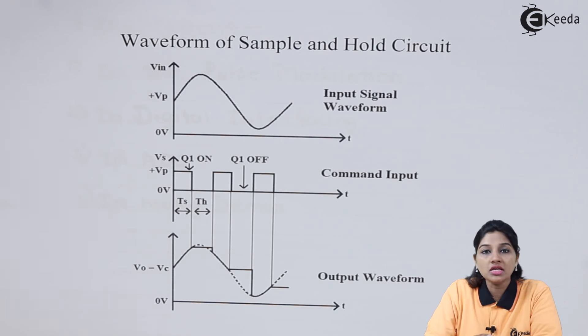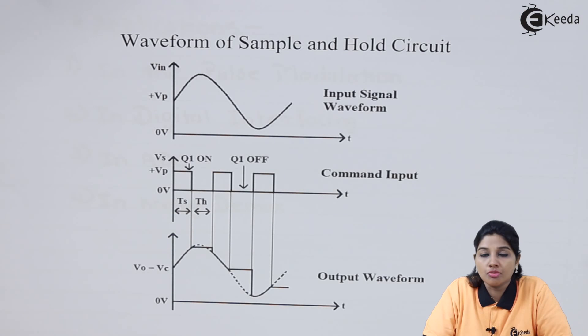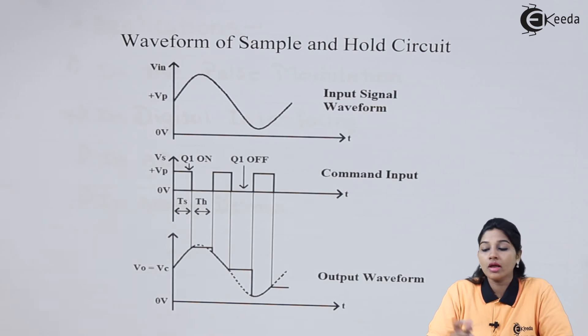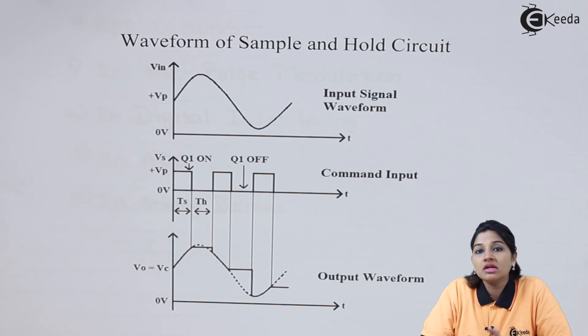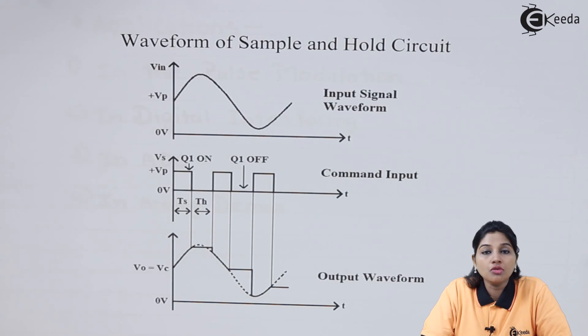Ts is defined as the time interval during which the capacitor charges to the instantaneous value of input voltage and performs the sampling process — this is called sampling time. Th is called holding time and is defined as the time interval during which the capacitor is disconnected from input voltage and holds the charge present on it until the next sampling cycle — this is called holding time Th. The total time period T is given by the combination of sampling time and holding time.